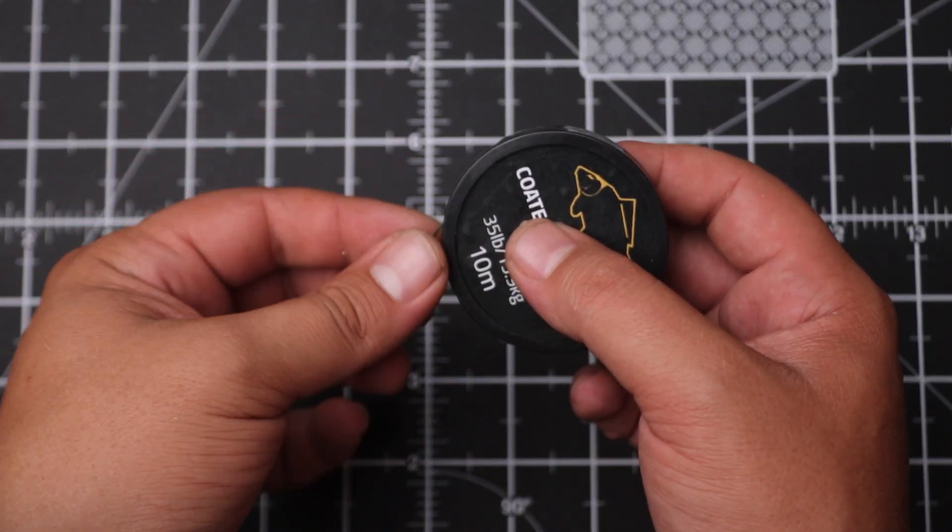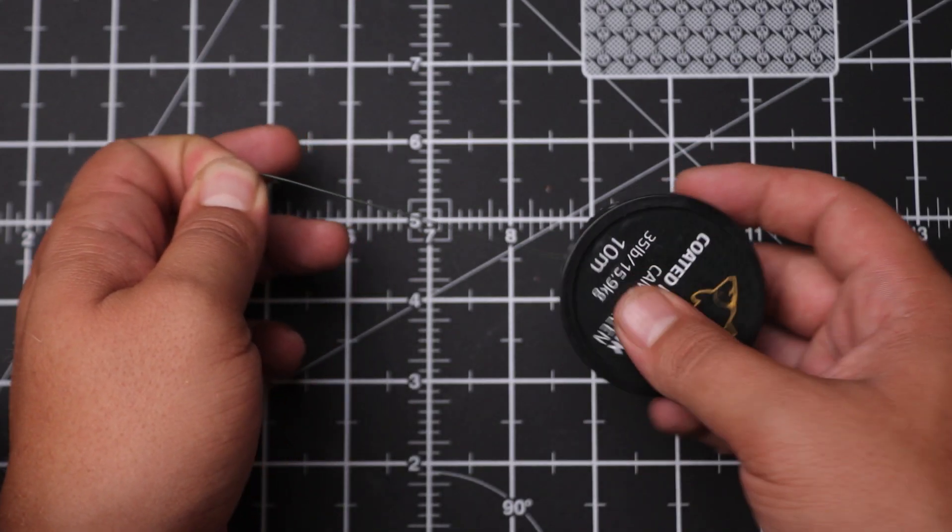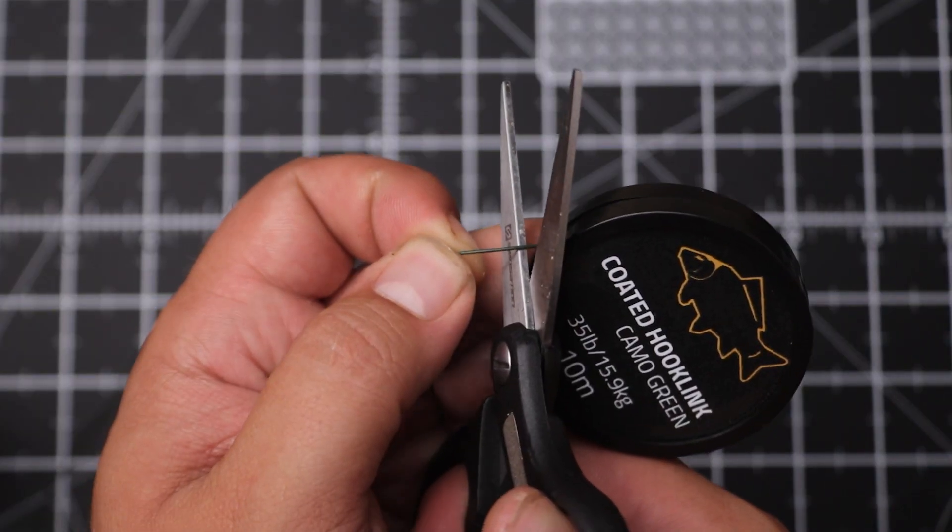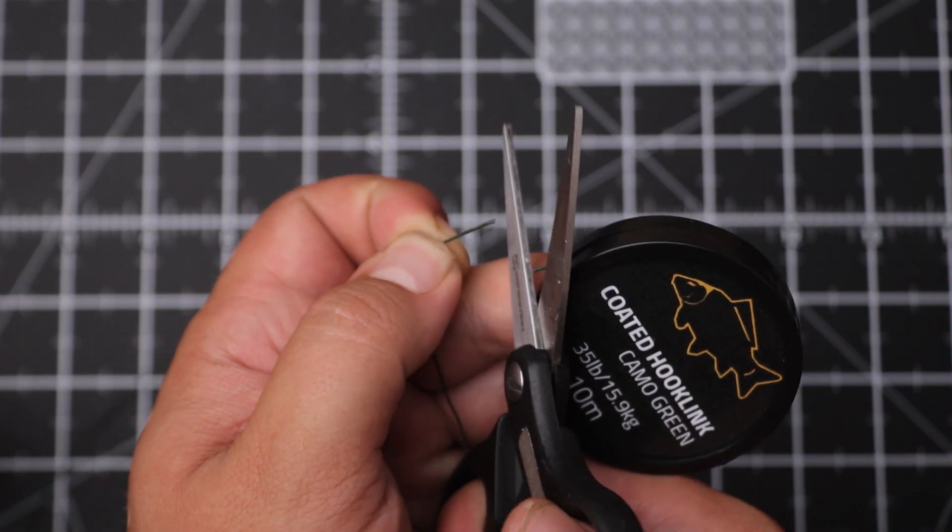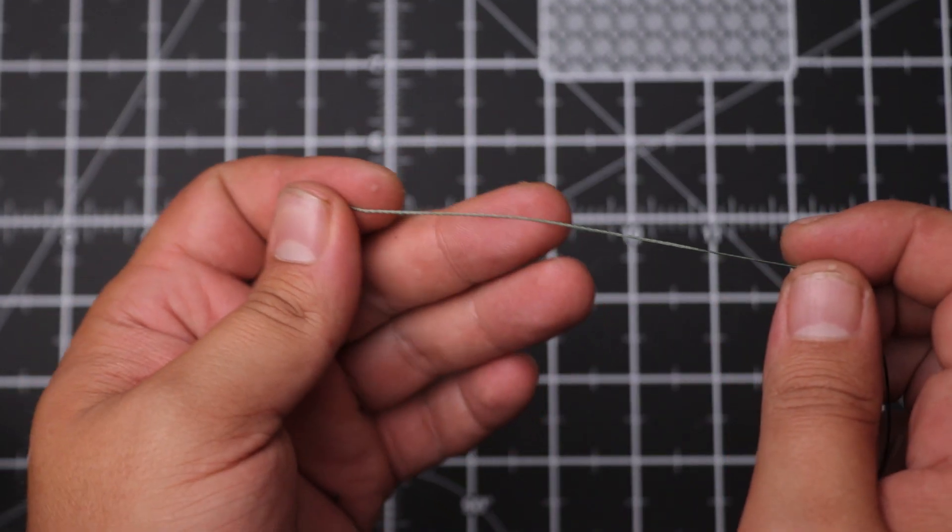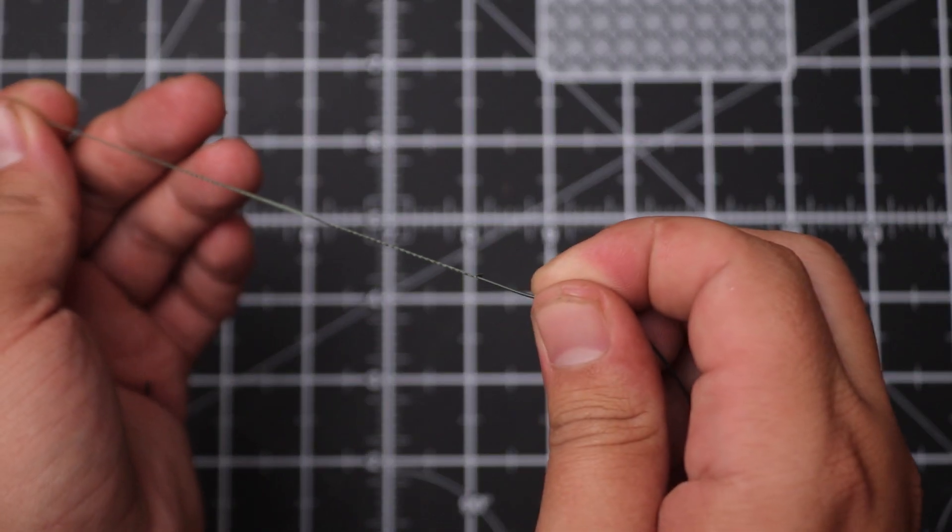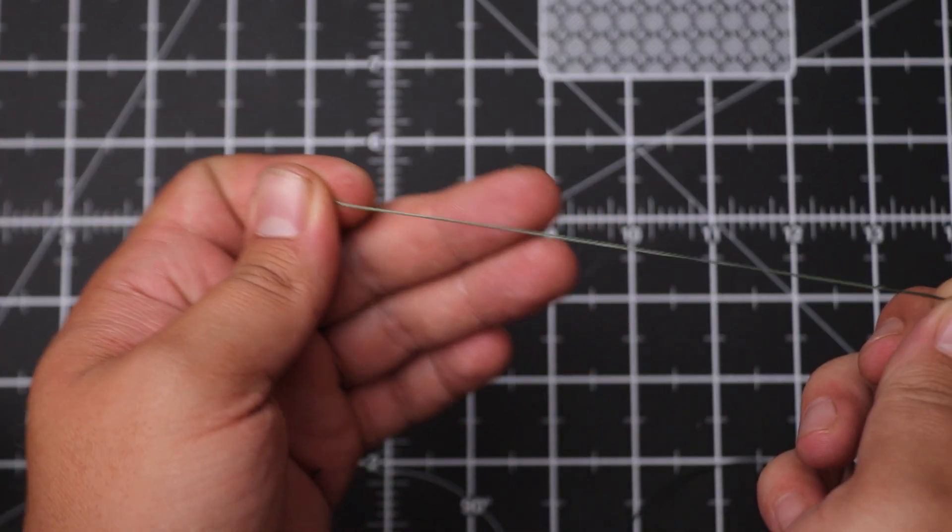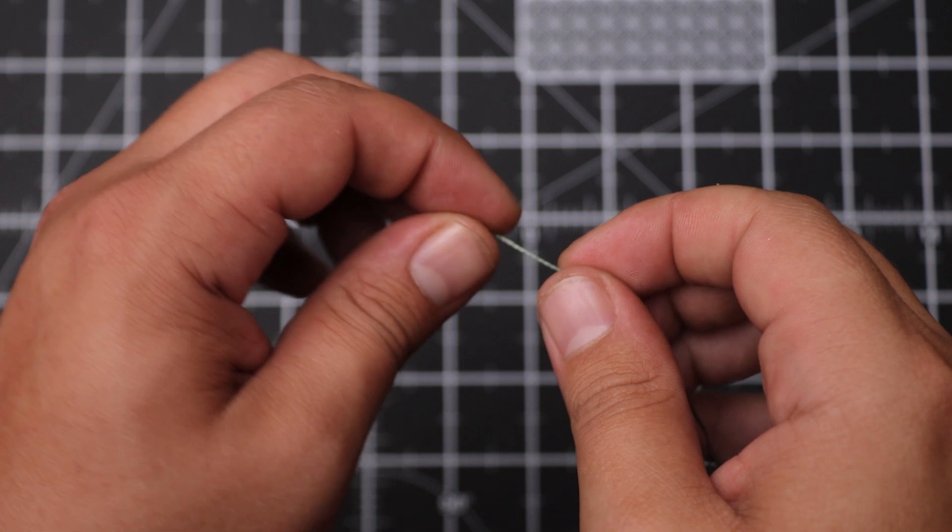Start off by taking about 30 or so centimeters of the coated hook link. You can just cut that off with your scissors. And then make sure to strip off about, I'd say, around 10 centimeters of the coated hook link.